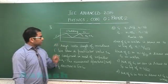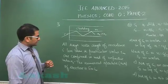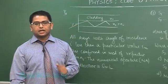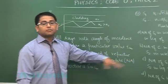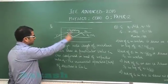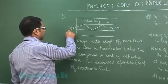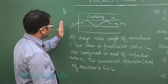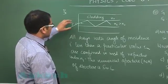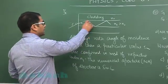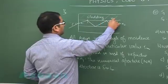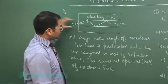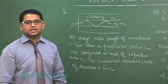Question 17 begins Section 3, which is paragraph-based; questions 17 and 18 may each have more than one correct option. The paragraph concerns an optical fiber where light is incident at angle i, giving a refraction angle less than i. The outer cladding has a lower refractive index, so light bends toward the normal. Total internal reflection (TIR) occurs at the core-cladding interface because the cladding refractive index is less than that of the glass core — this is how light is guided through an optical fiber.